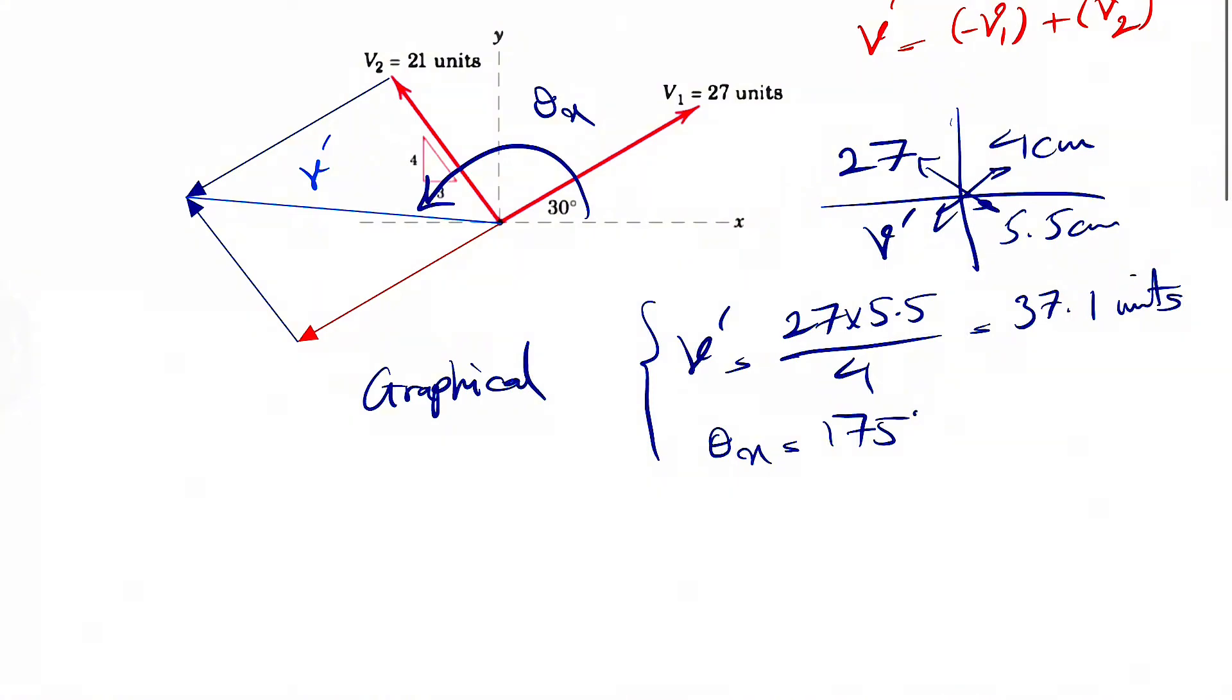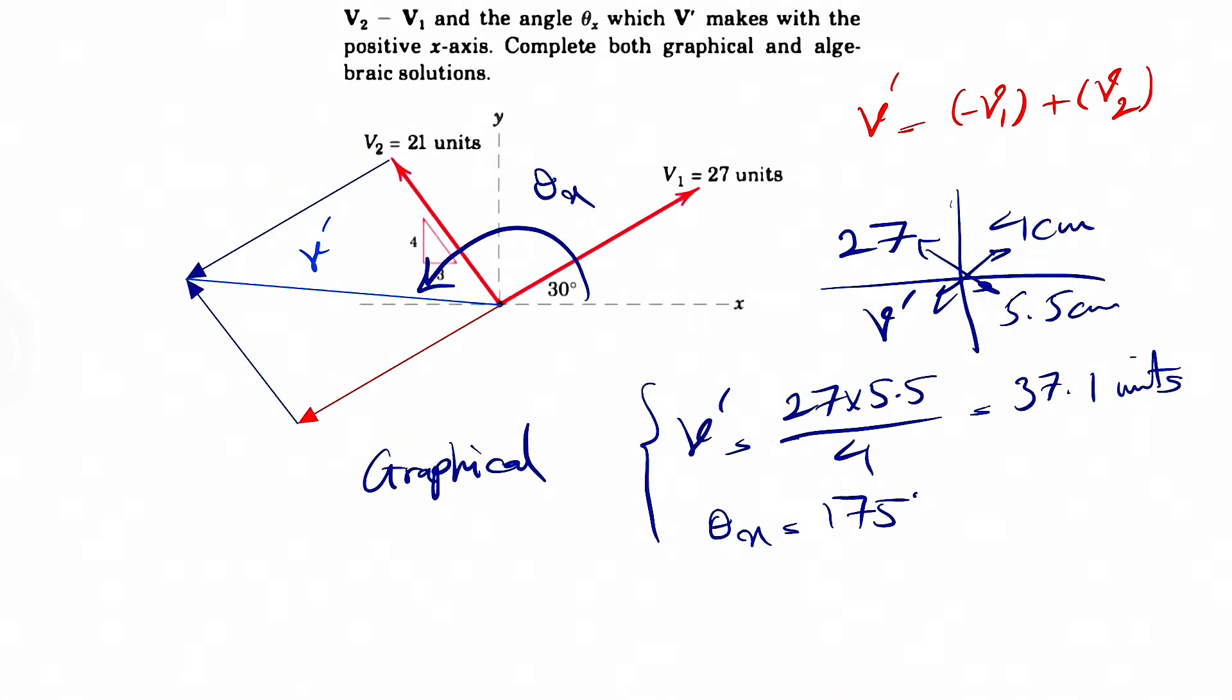Let's use algebra and the law of sine and law of cosine in order to find these. So for that, we need one of these triangles that we have in here. And in here, we know this angle is 30 degrees. And if we want to find this angle in here...